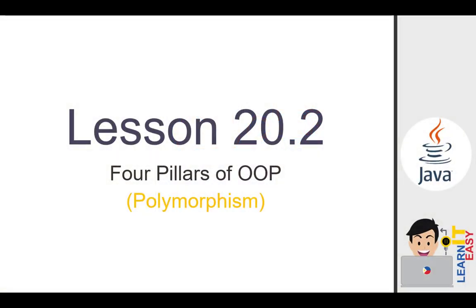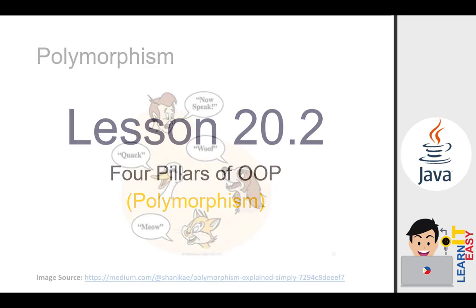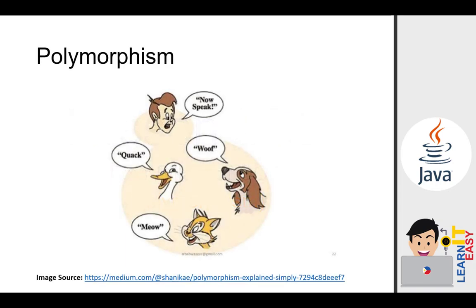Hi, I am Renmark and welcome to our video tutorial about Java programming. In this video we will talk about Lesson 20.2, which is polymorphism, one of the four pillars of object-oriented programming. So let's get started.